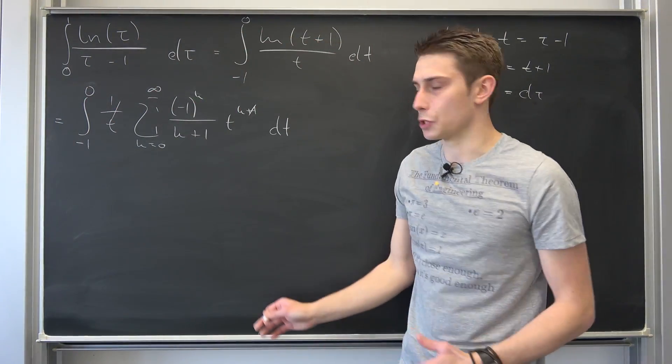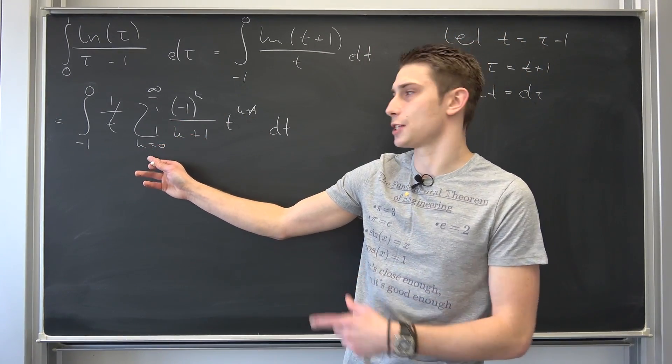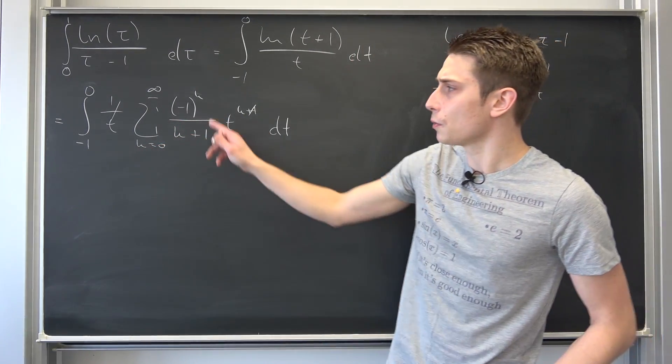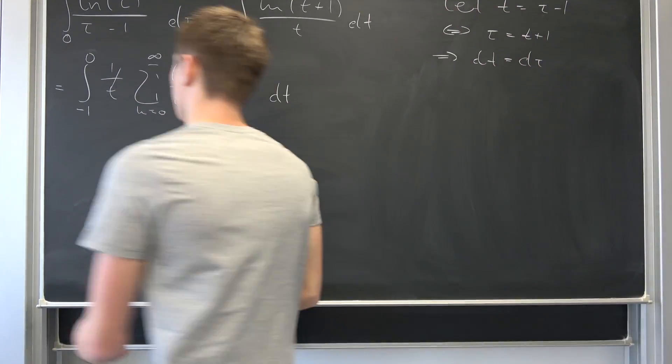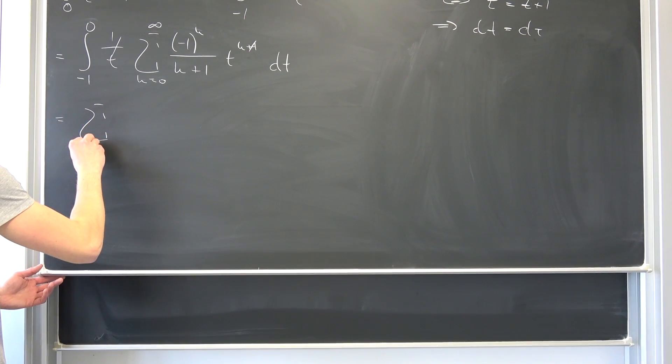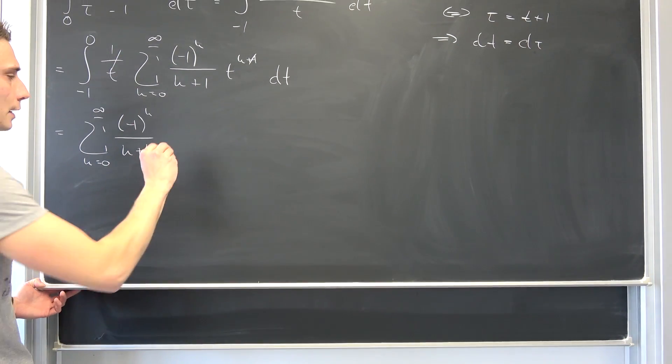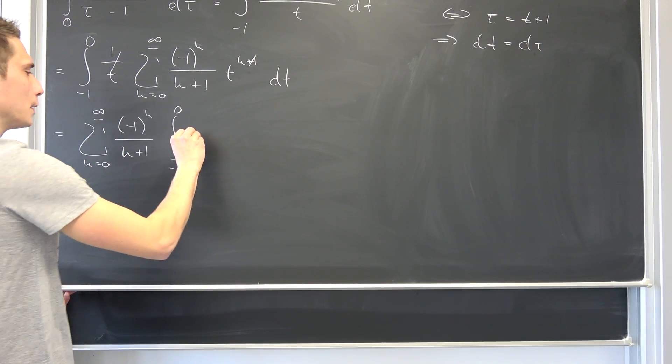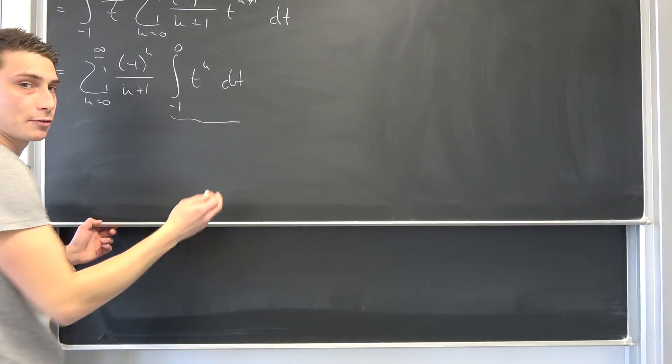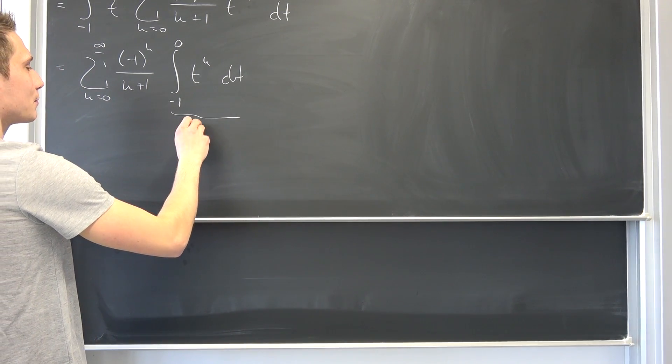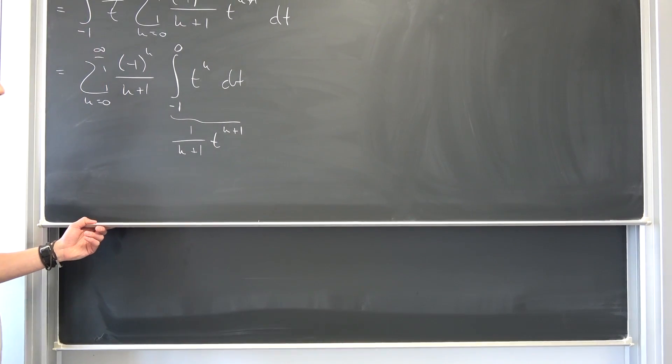Now once again, it's a matter of dominated convergence theorem right here. It's left as a little exercise to the viewer to figure it out why we can interchange this infinite summation and this integral right here. Also, we are going to bring this stuff to the outside because it's just a constant when it comes to integrating with respect to t. We are going to get sum running from 0 to infinity, negative 1 to the kth power over k plus 1 times an integral running from negative 1 to 0 of t to the kth power integrated with respect to t. We know how to integrate this. We have done it before. So this right here is nothing but 1 over k plus 1, t to the k plus 1 power.